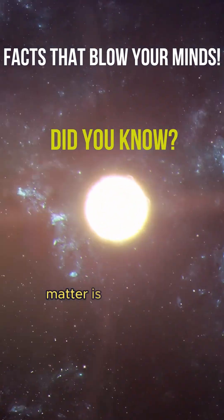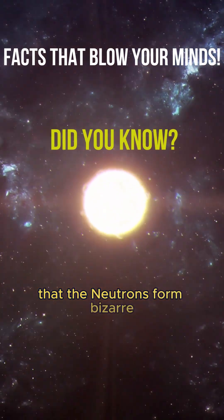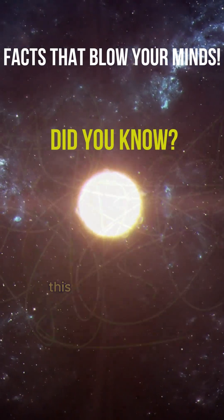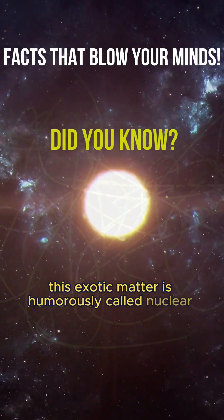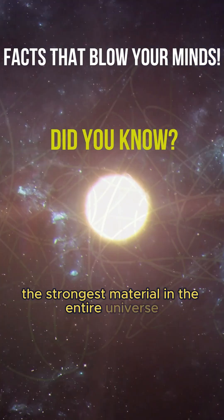Scientists theorize that deep inside the neutron star, matter is under such incomprehensible pressure that the neutrons form bizarre, tangled shapes like sheets and strands. This exotic matter is humorously called nuclear pasta, thought to be the strongest material in the entire universe.